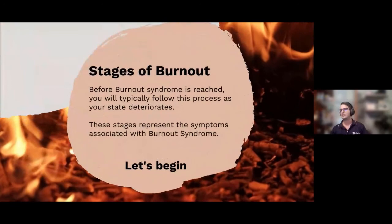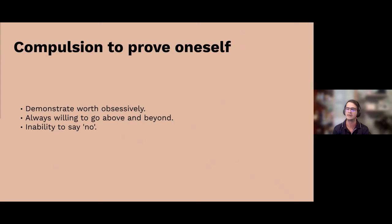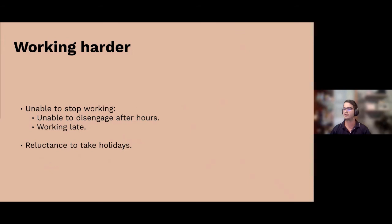It is good to evaluate yourself against these 12 stages to see whether you are perhaps going down a dangerous hole. The first is the compulsion to prove yourself — and I'm sure a lot of junior developers who have just started at a company know exactly what this is. You have imposter syndrome and want to demonstrate your work, so you put in extra hours. The problem starts when you can't say no, and more work keeps getting piled on.